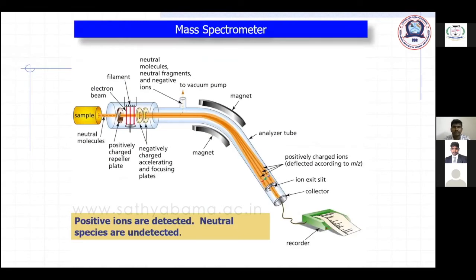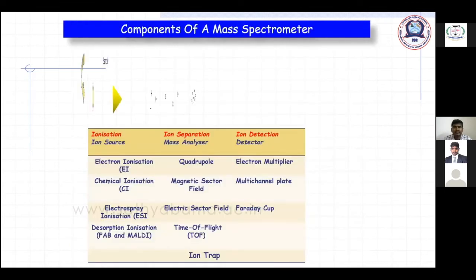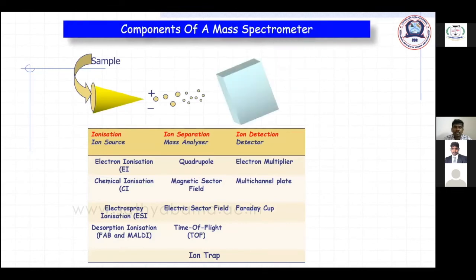In the mass spectrometer, the sample is introduced and a filament generates electrons. The system is completely sealed under vacuum. It directs only positive ions to the detector. The recorder captures electron abundance — only positive ions are detected in mass spectrometry; neutral species are undetected. The main components of a mass spectrometer are: ion source, mass analyzer, and detector.